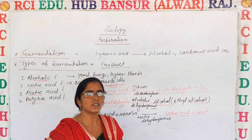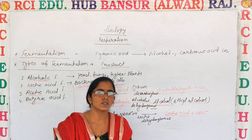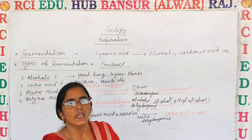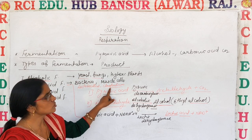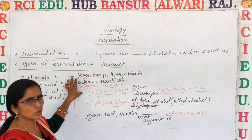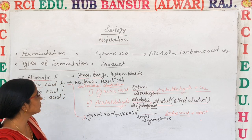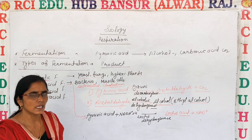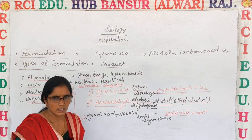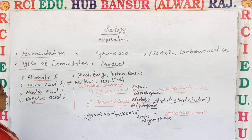The bacteria involved are Clostridium and Lactobacillus, which perform anaerobic respiration. This process also occurs in muscle cells. So lactic acid fermentation is carried out by Lactobacillus and Clostridium, and also in muscle cells.